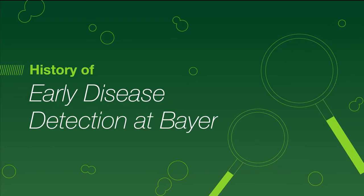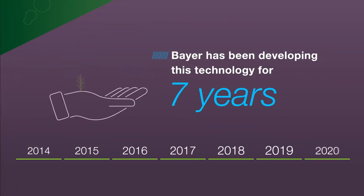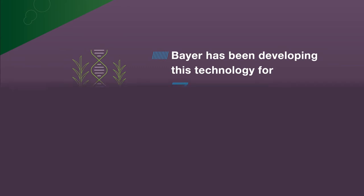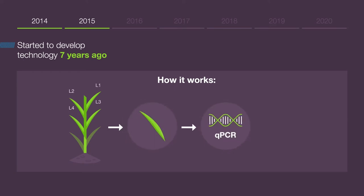Now we'll take a look at how Bayer have developed this technology over the last seven years. We started to use this technology on septoria back in 2014. In its simplest form, we are able to select a leaf from a plant, pass it through a qPCR reaction, which ultimately tells us the quantity of septoria DNA within that leaf.